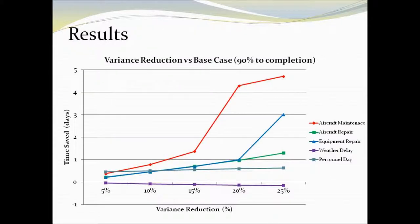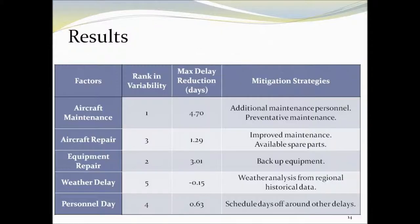The result difference was plotted and from this graph we can see that aircraft maintenance had the biggest impact, followed by equipment repair, then aircraft repair, then personnel days, and finally weather delay. The parameters were ranked by their impact and we provided some possible mitigation strategies. The rank represents the order in which NOAA should focus their energy and resources.